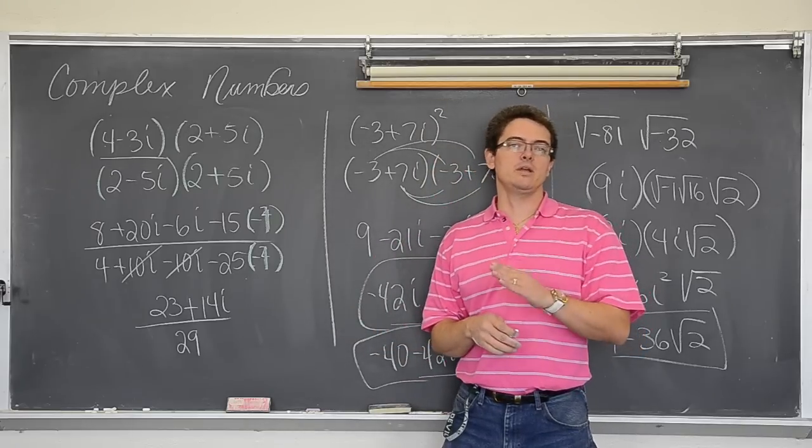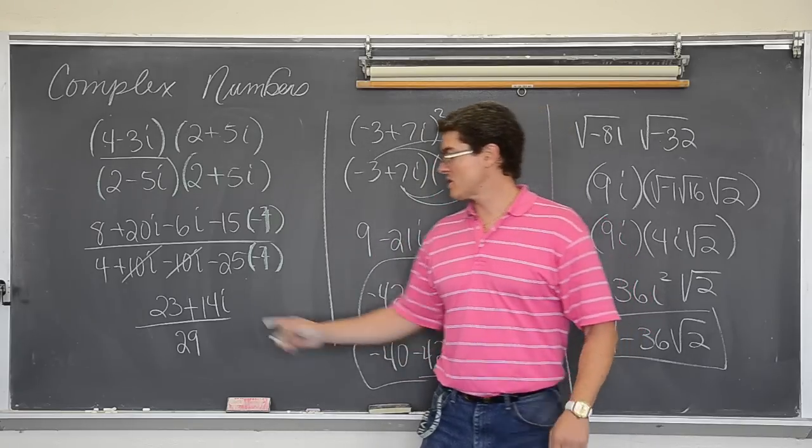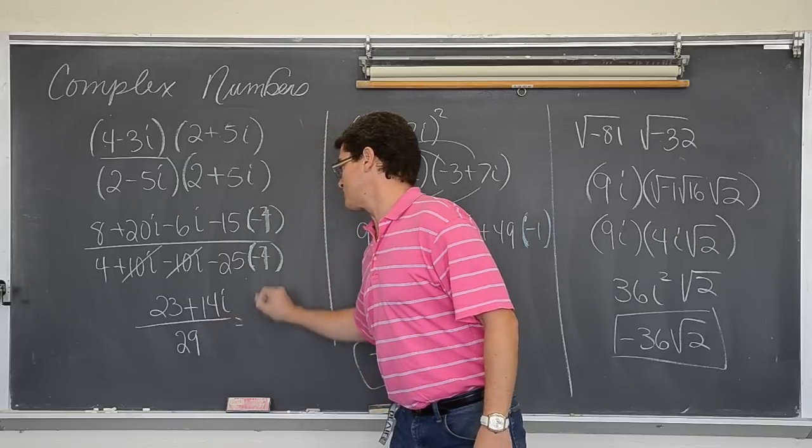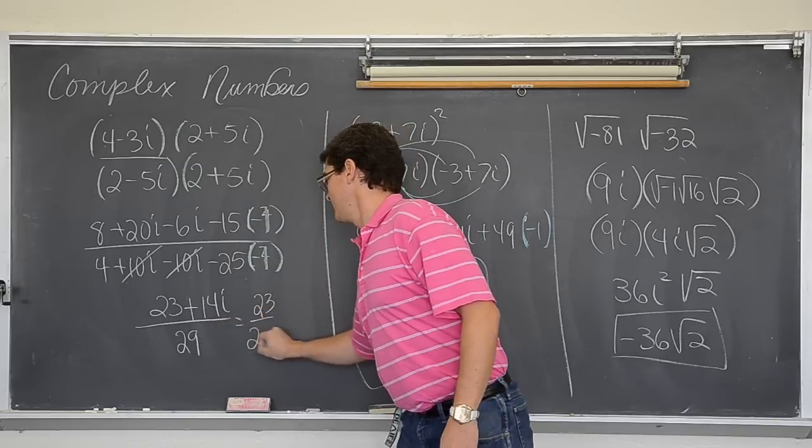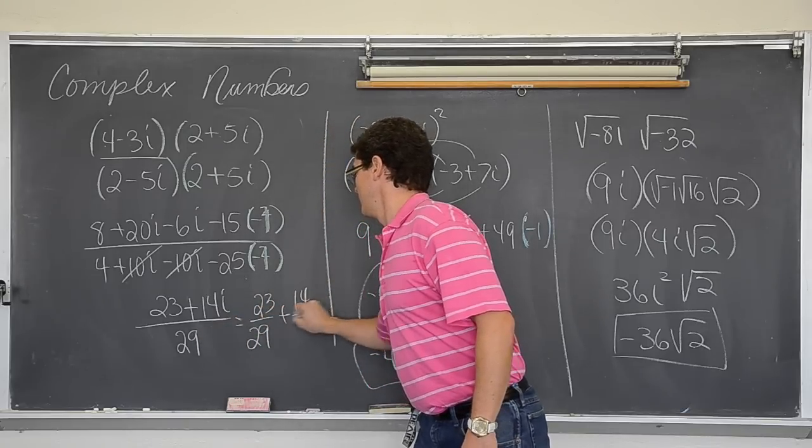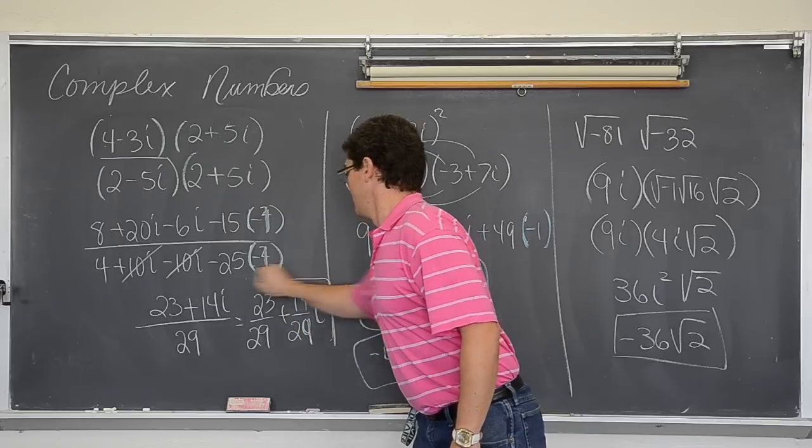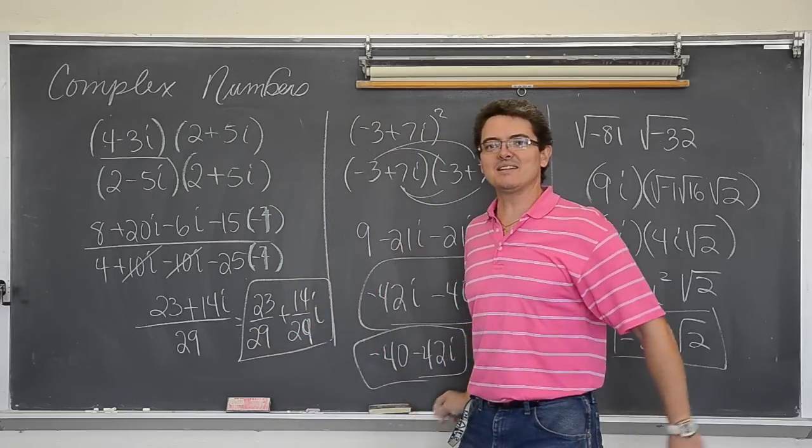Now this is not done. Complex numbers must have a real and an imaginary part. So I am simply going to split this apart and give each fraction its own denominator of 29. And BAM! Got it done.